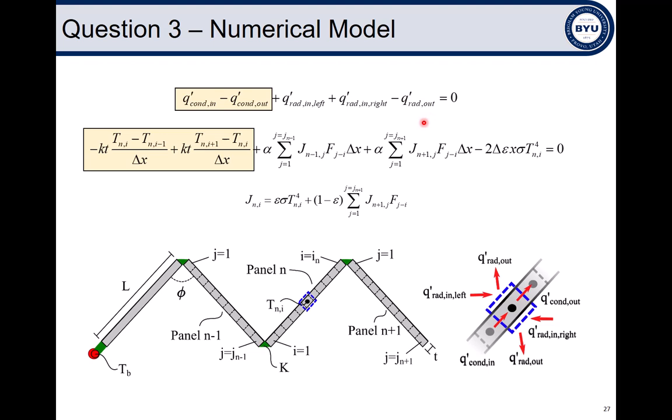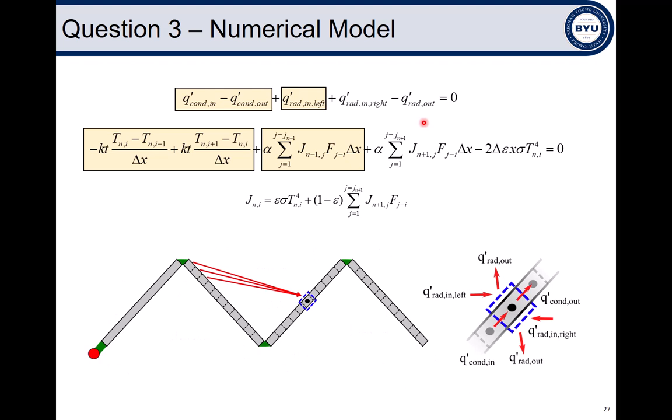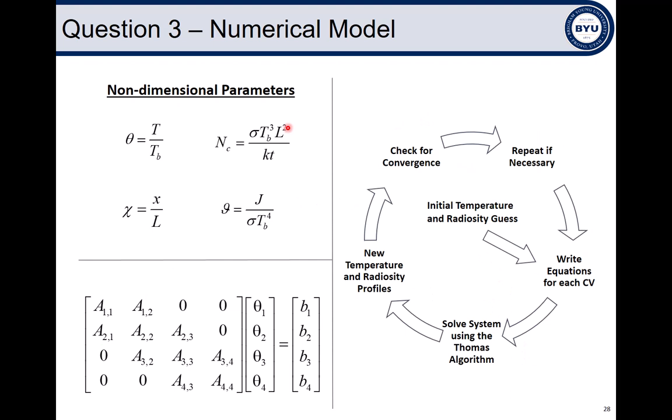We have several terms. Conduction heat transfer terms, I used a numerical approximation of Fourier's law. For the radiation terms, I summed up the emitted and the reflected thermal energy, which is the radiosity, incident on the control volume of interest from all control volumes on the opposite panel. And I did this for both sides of the control volume of interest. Then finally, I modeled the emission from the control volume just using the Stefan-Boltzmann law. This gives us the final governing equation that I non-dimensionalized, and one equation was written for each control volume, giving this matrix. An iterative method using the Thomas algorithm to solve the system of equations produced a solution after an initial guess was made for temperature and radiosity profiles.